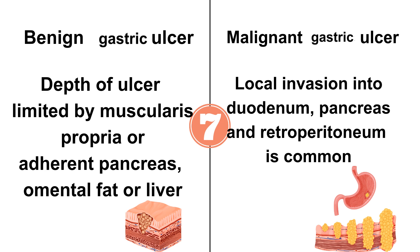In benign, the depth of the ulcer is limited by the muscularis propria, or it can be adherent to the pancreas, omental fat, or liver. While in malignant, there will mostly be local invasion into the duodenum, pancreas, and retroperitoneum.